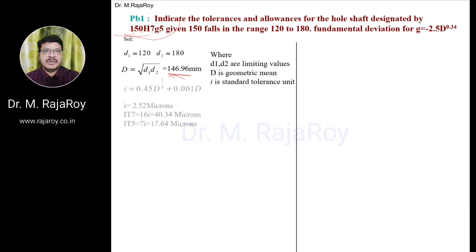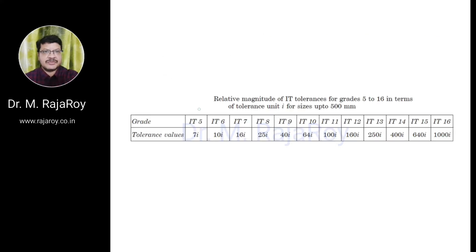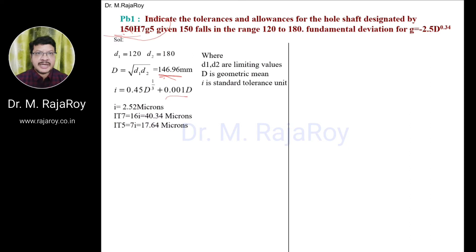After calculating the geometric mean, you have to calculate the standard tolerance unit, that is I. The equation is given here — using this equation calculate the I value, which you get in microns. In this problem you get I as 2.52 microns. This I value affects the tolerance zone. The tolerances for hole and shaft are given as H7 and G5 respectively. With respect to H7 you calculate IT7, and with respect to G5 you calculate IT5. These equations can be collected from the data book: IT5 equals 7i, IT7 equals 16i. Now calculate IT7 and IT5 — both values are obtained in microns as shown.